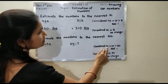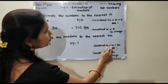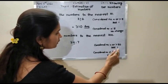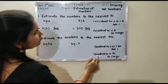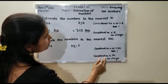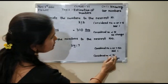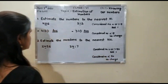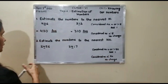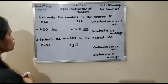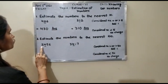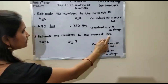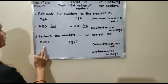Next question: estimate the numbers to the nearest hundred. The rule is: if your considered number is equal to or greater than 50, you will add 1. If your considered number is less than 50, there will be no change.